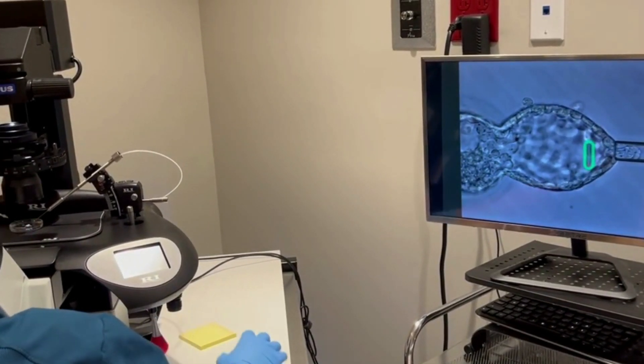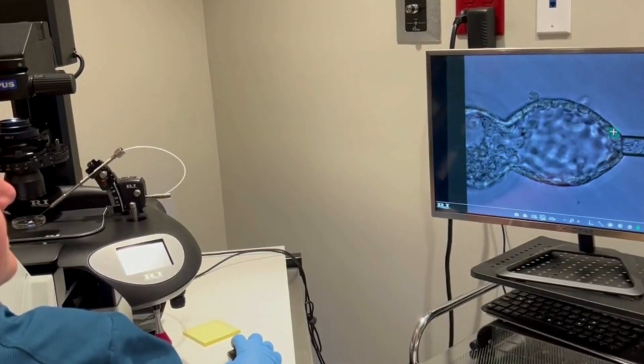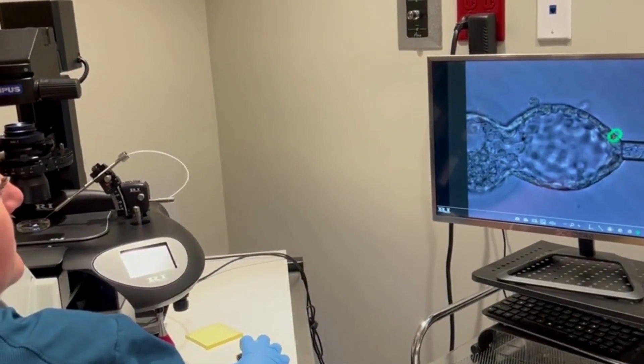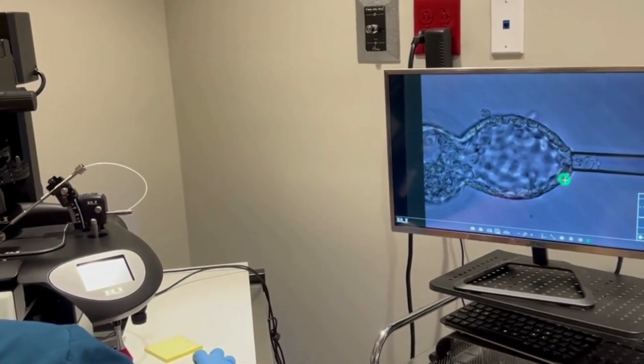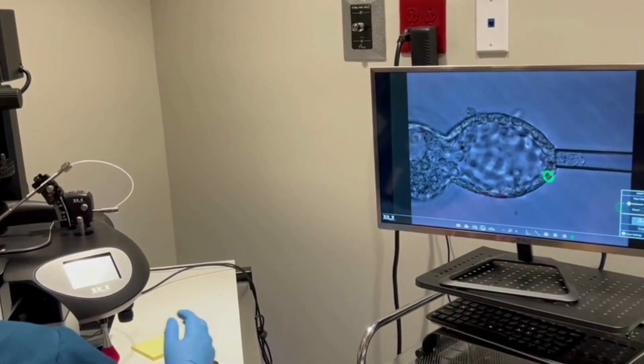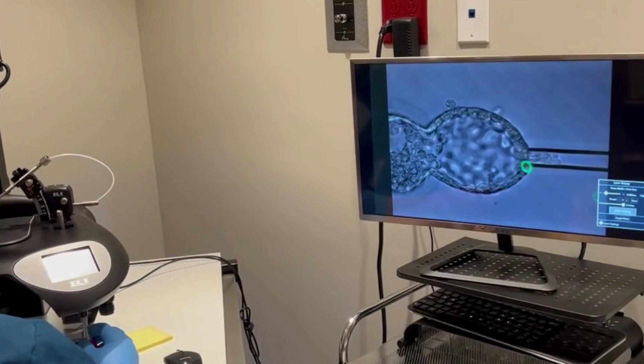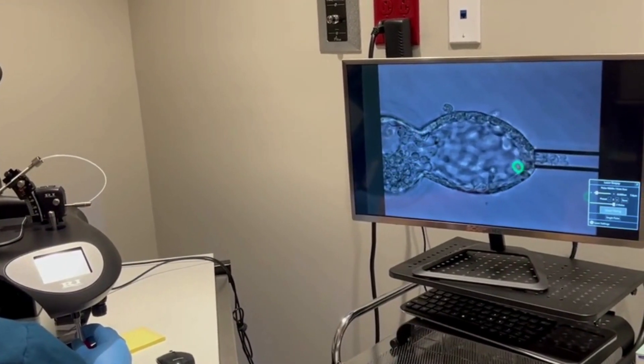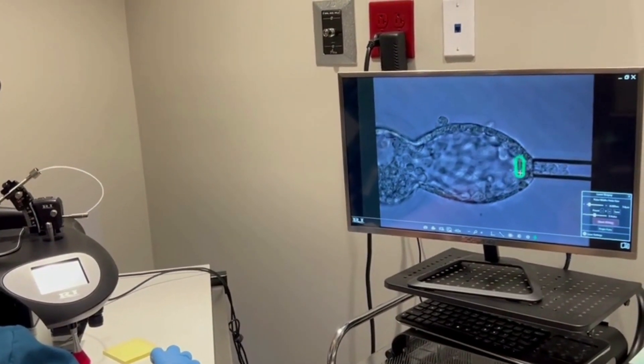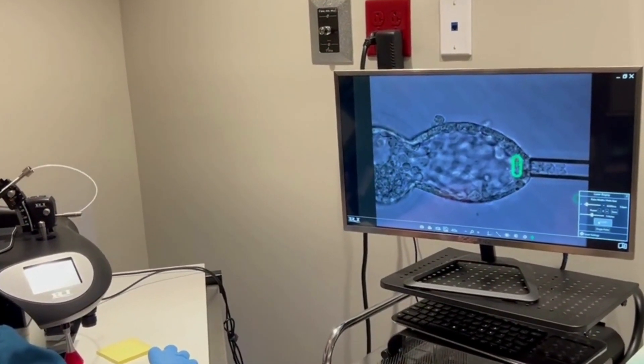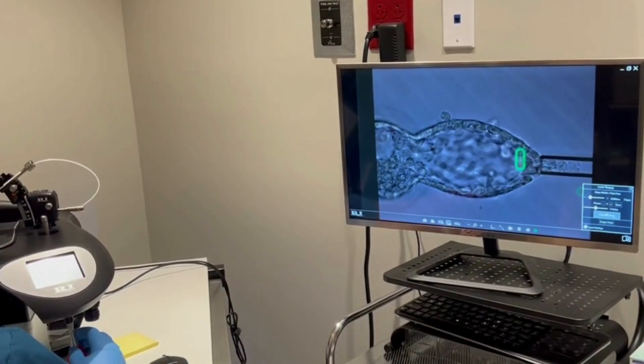We use the microscope to hold the embryo with the holding pipette on the left side and the biopsy pipette on the right side is used to grab about six to eight trophectoderm cells of the embryo. And then you can see us using the laser, which is the green line again, to cut the cells off.